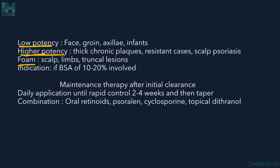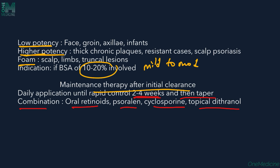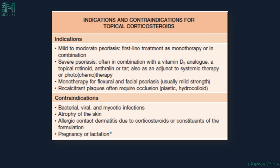Topical steroids are used when body surface area involvement is 10-20% in mild to moderate psoriasis, and as maintenance therapy after treating severe psoriasis with systemic agents to maintain long-term remission. Topical steroids must be tapered and then stopped. Combinations with oral retinoids, psoralens, cyclosporine, and topical dithranol can be used. Contraindications include mycotic, bacterial, or fungal infections, skin atrophy, allergic dermatitis, and pregnancy or lactation.